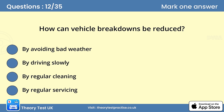Question 12. How can vehicle breakdowns be reduced? The answer is D: By regular servicing. Following the vehicle manufacturer's guidelines for service intervals will enable worn components to be replaced before they fail. This will help prevent costly breakdowns.